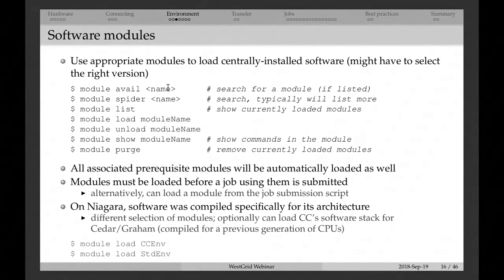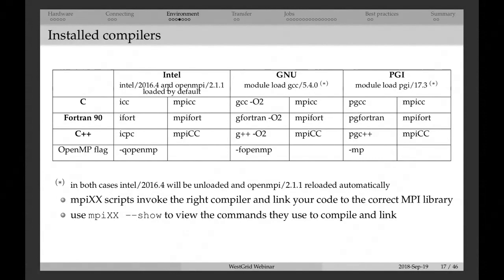Basic module commands: 'module list' to show all currently loaded modules; 'module purge' to unload all modules. This is for Cedar and Graham. On Niagara, the setup is slightly different because Niagara has new processors and all software is compiled with optimization for the Skylake architecture — a somewhat different software stack. If you still want to use the standard Compute Canada modules from Cedar and Graham on Niagara, just type 'module load CCEnv' to load the standard Compute Canada software environment on Niagara.